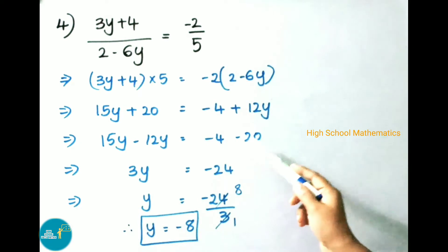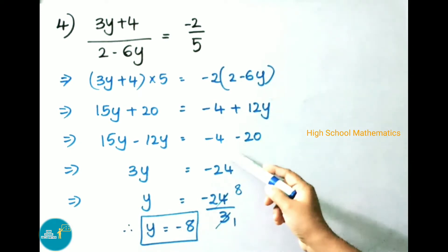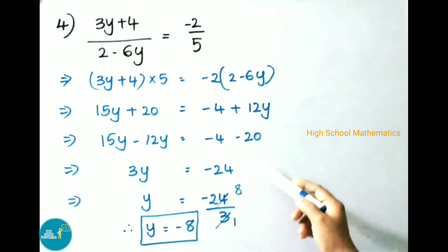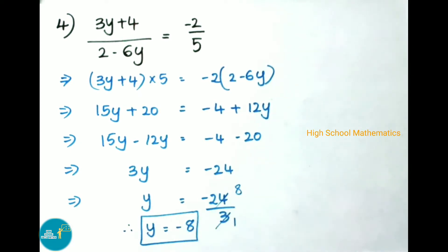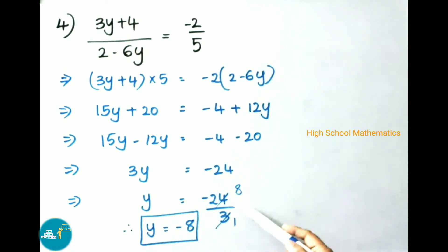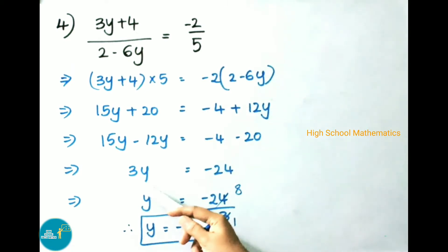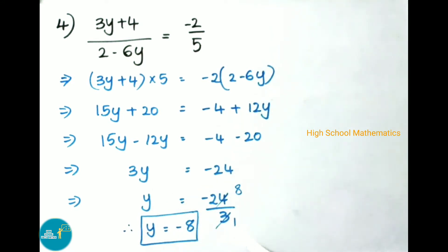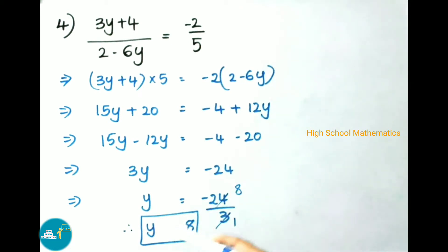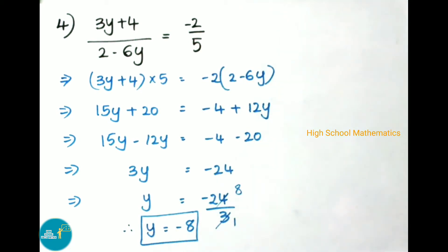Same sign, we have to do addition. So -4 - 20 = -24. That implies y = -24/3. Here 3 is going to multiply, on transposing it is divided by. 3 × 8 = 24. Therefore y = -8.